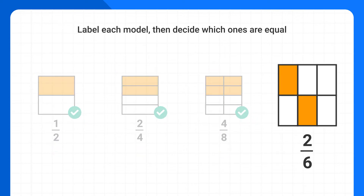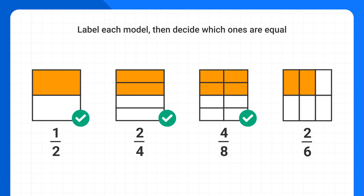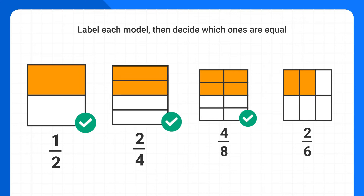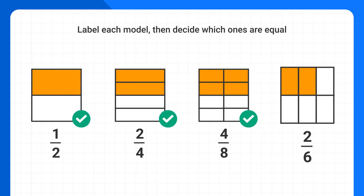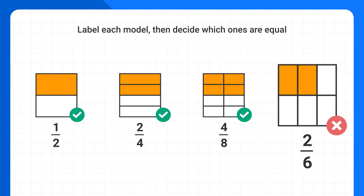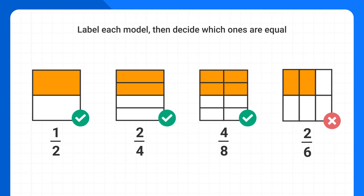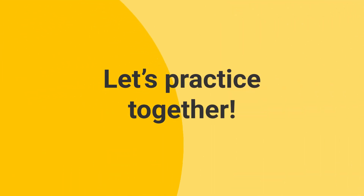This last shape is an example of a model that is not equal. If you take that bottom piece and move it up, it's clear there's still less of the shape shaded than with all of the rest of them. So in this problem, the first three shapes are all equivalent, while this last one is not. This can take some time to practice and get comfortable with, so let's do one of these together now.